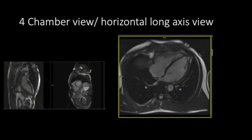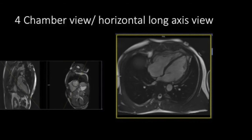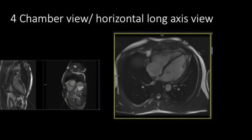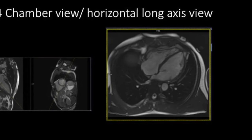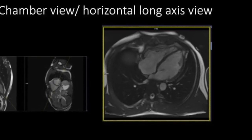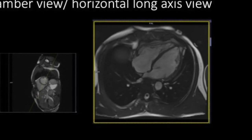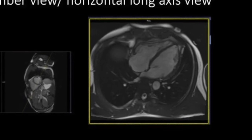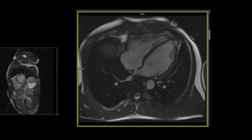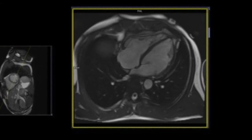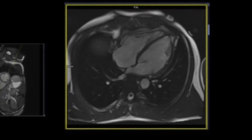Then we derive the four-chamber view, or the horizontal long axis view of the heart. The plane is parallel to the two-chamber view and passes through the center of the mitral valve and the ventricular apex. The second plane is set in the short axis image cutting across the base of the ventricles. Care has to be taken that the plane passes along the right ventricular apex, and we must ensure that the plane does not pass through the root of the aorta. For this, we need to scroll the short axis stack and make sure the plane is not cutting through the aortic root in the basal slices.